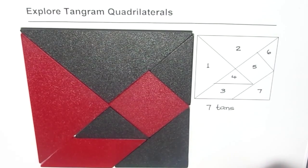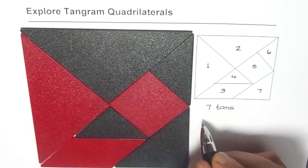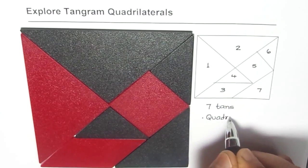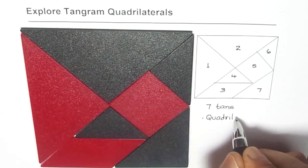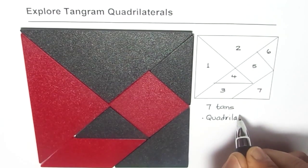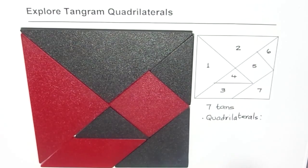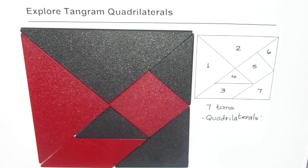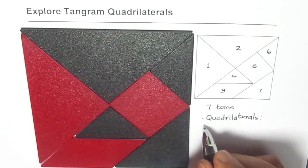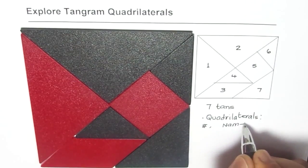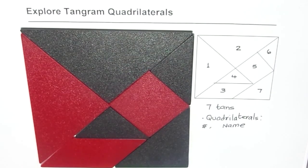Now for you the exercise is to figure out how many quadrilaterals are there. You can pause the video and then write down the numbers. How many quadrilaterals are there? Can you write their numbers and can you write their names? So write down their numbers and their names. That is the first exercise for you.